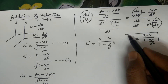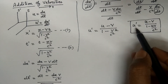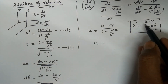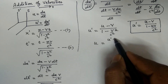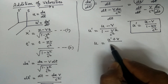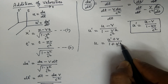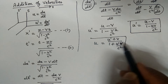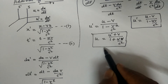This is the addition of velocities formula. If we observe this velocity from frame S, then u-dash is replaced by u, u is replaced by u-dash, and V becomes negative, giving: u equals u-dash plus V upon 1 plus u-dash V upon C-square. This is the velocity addition theorem.